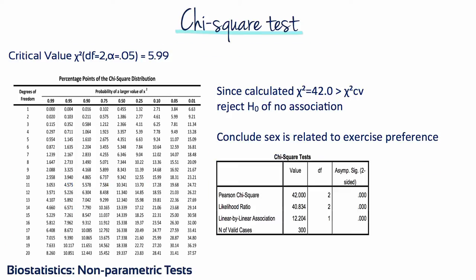Now that we know the chi-square value and degrees of freedom, we can test the hypothesis of no association. One way is to compare the calculated chi-square to the critical value. Using an alpha level of 0.05, the critical value for 2 degrees of freedom is 5.99. Since chi-square of 42 is greater than 5.99, we reject the null hypothesis of no association and conclude sex and exercise type are related. The p-value is less than 0.001, meaning the probability of observing a chi-square of 42 or more, if there was no relationship, is less than 0.001.